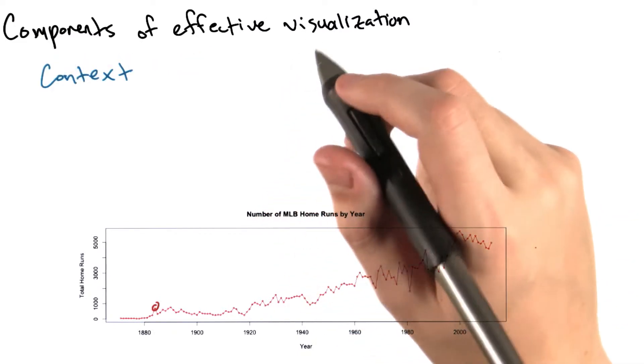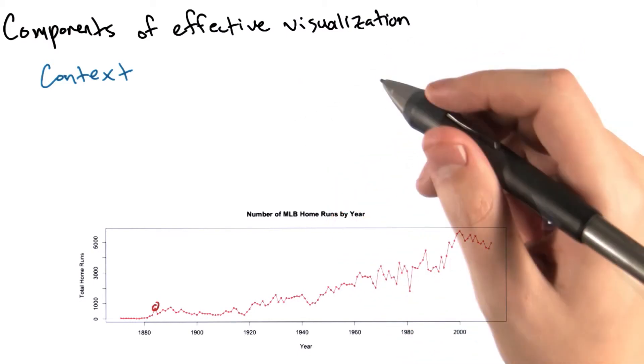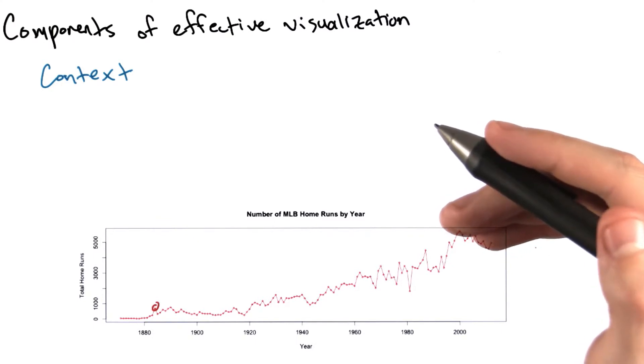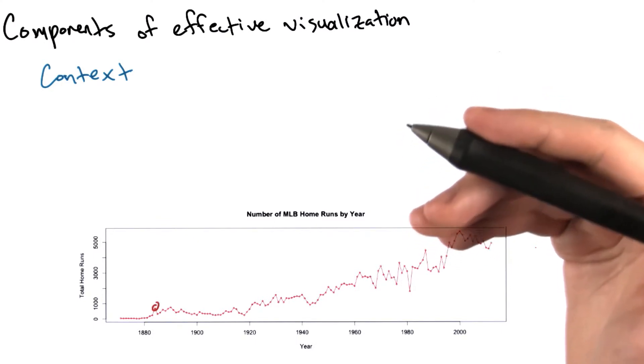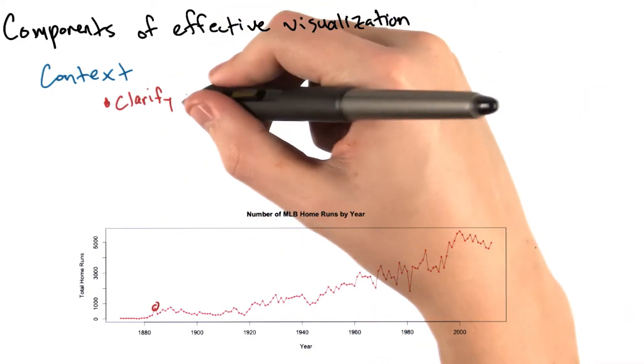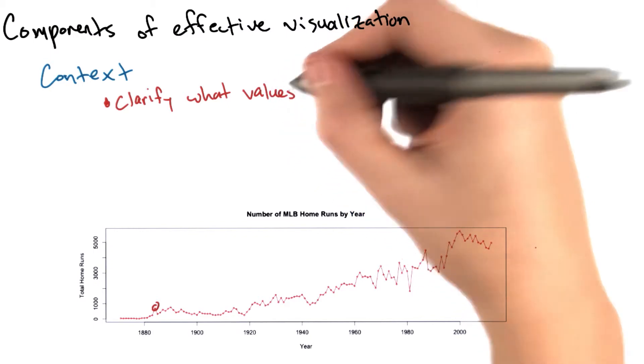And the final important ingredient of an information visualization is context. If your audience is unfamiliar with the data, it's your job to clarify what values in your graphic represent and explain to people how they should read your chart. In this particular visualization, I've provided some context by giving the chart a title.